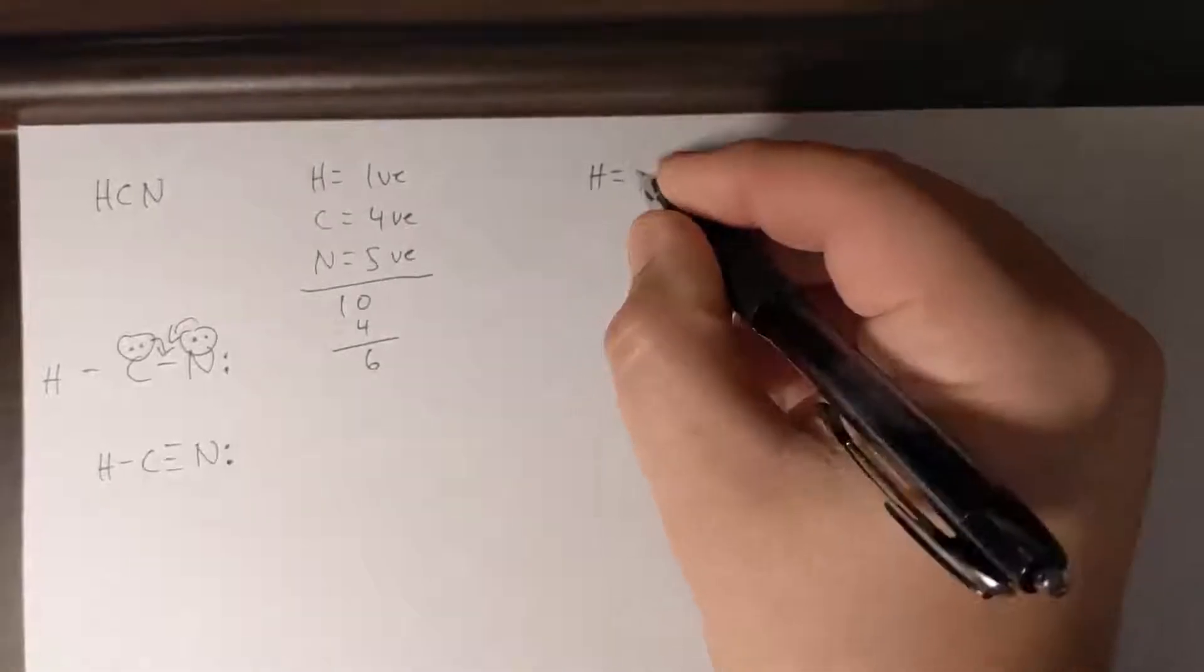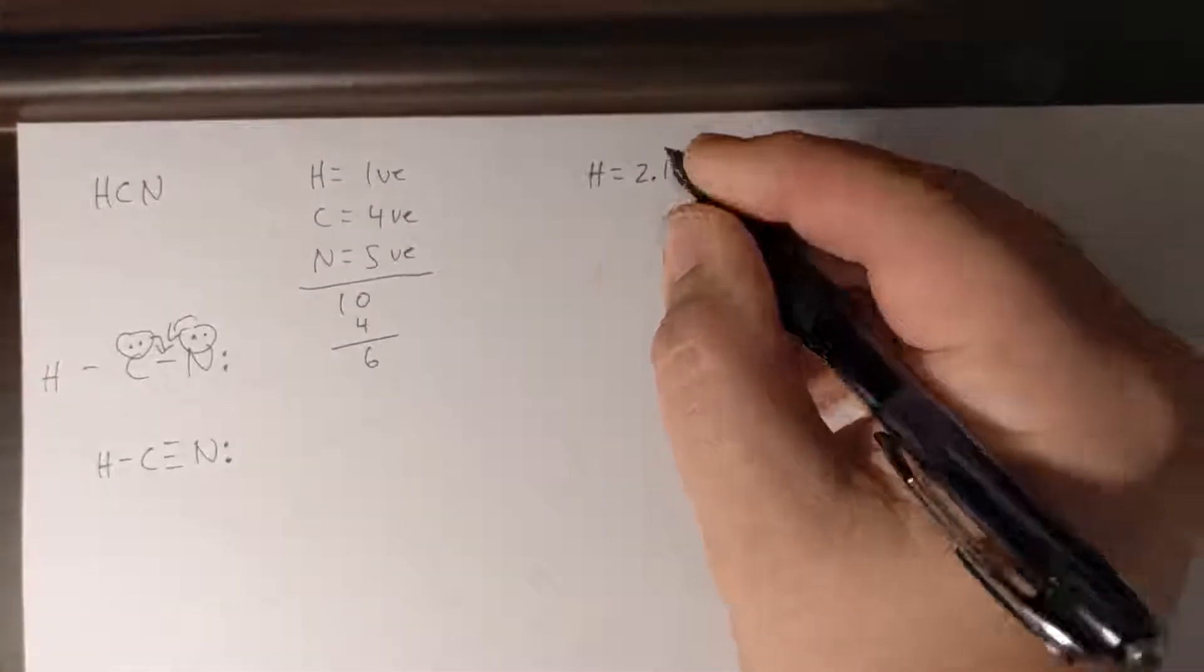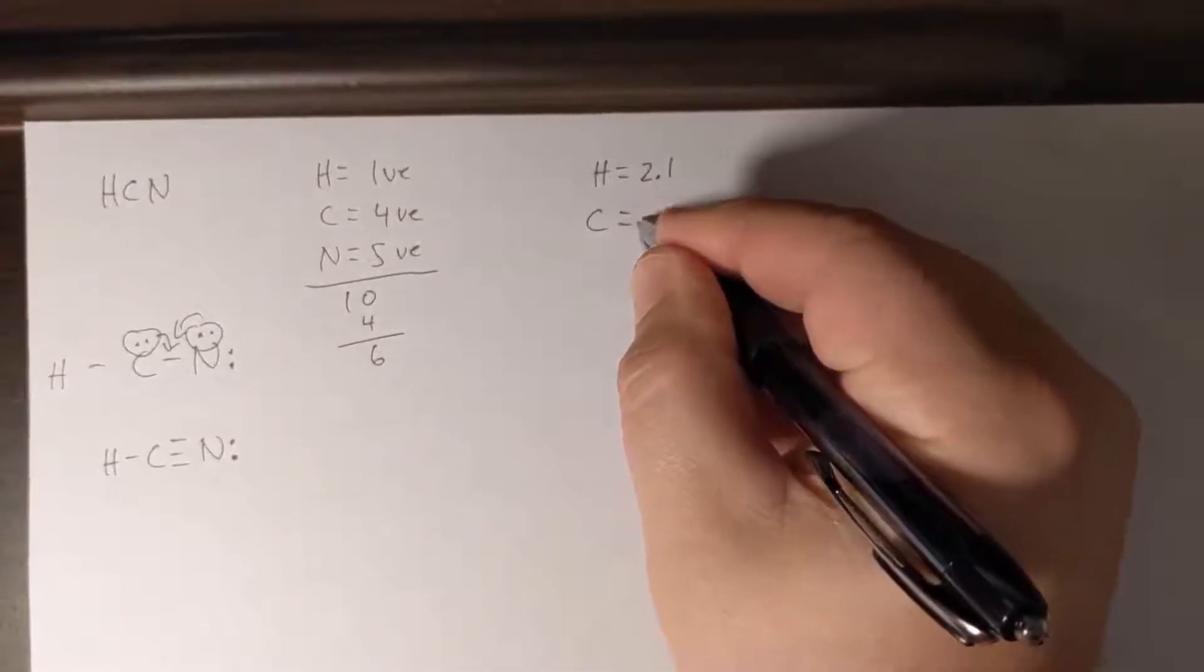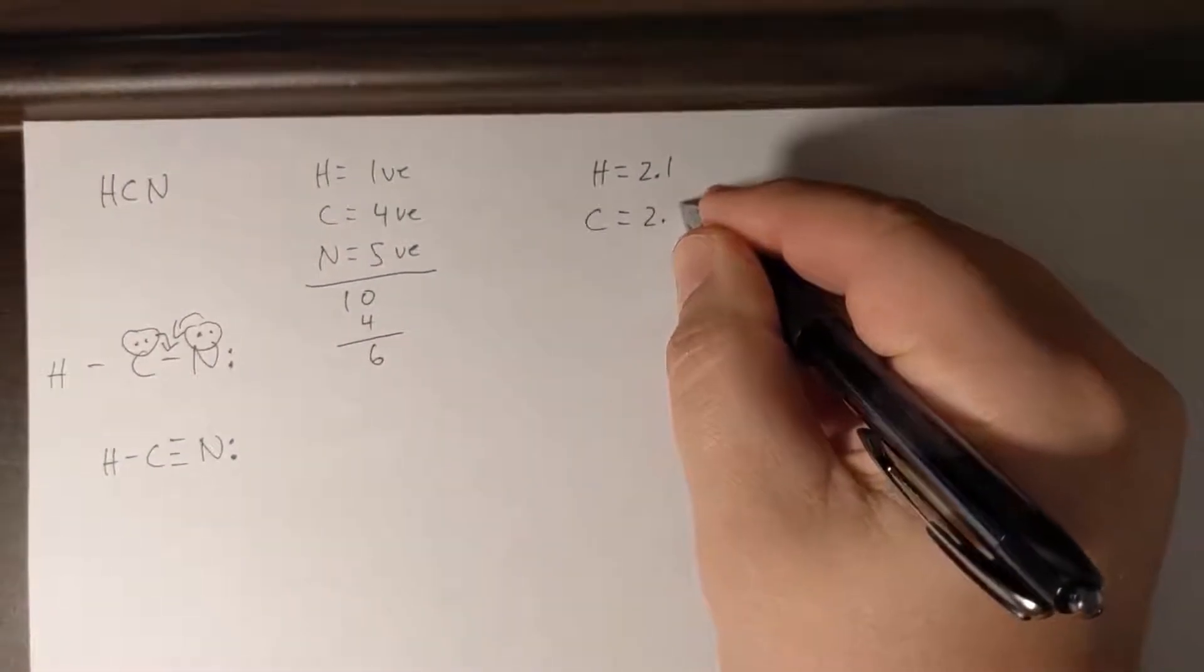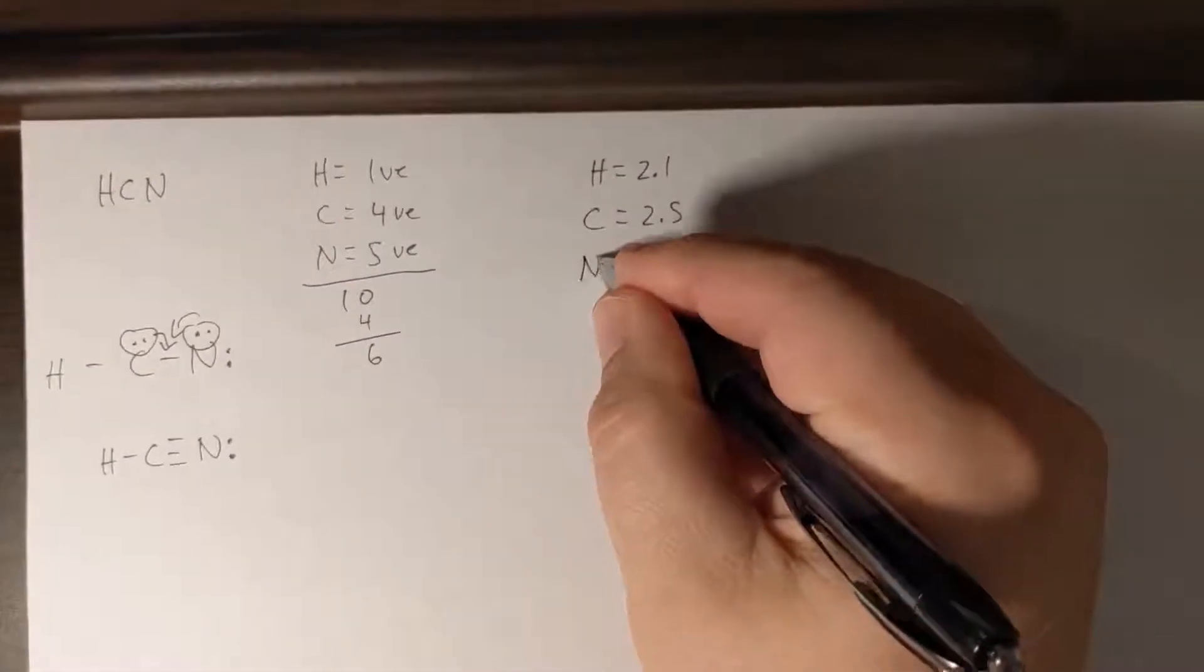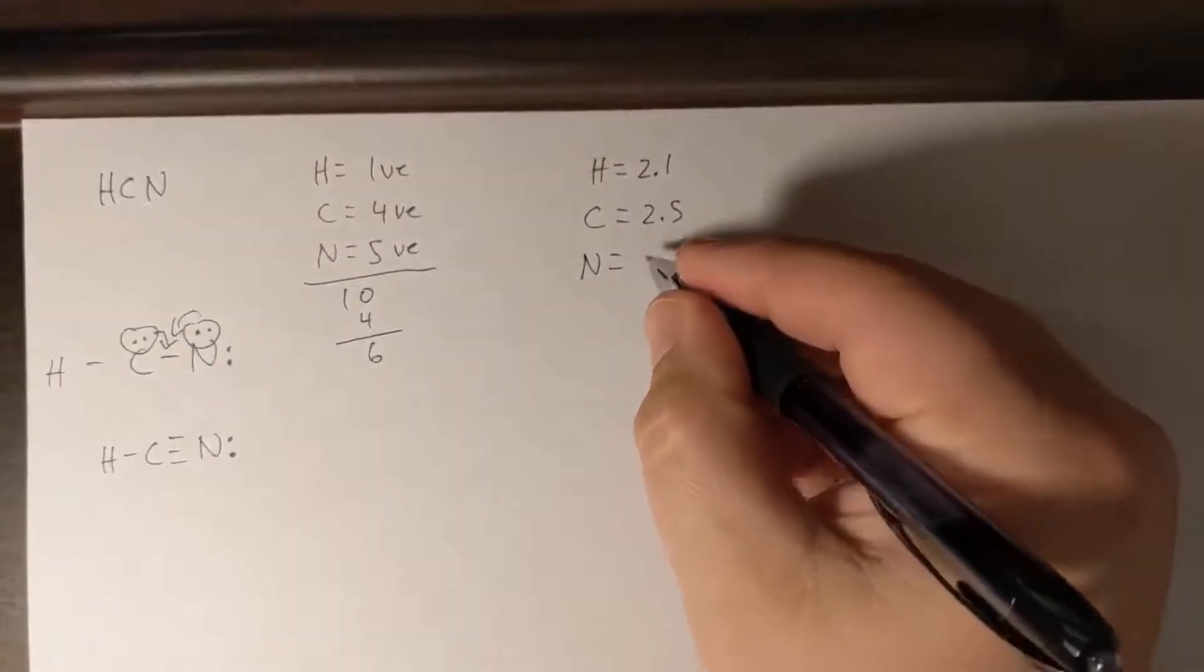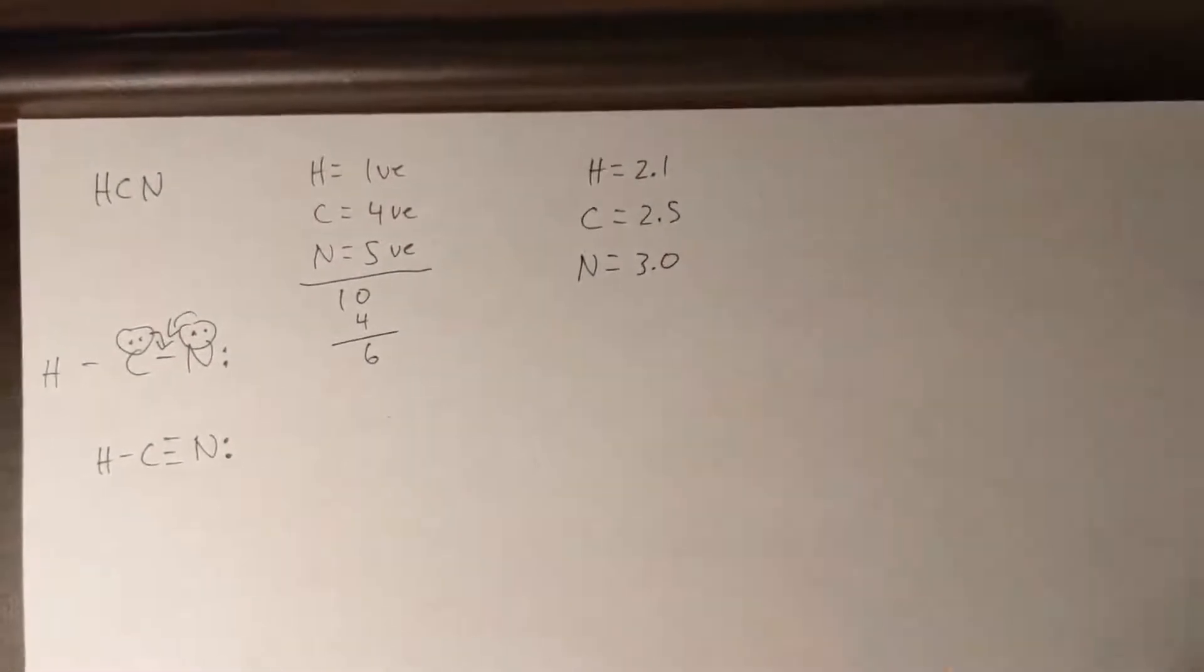And so we're going to look up the values for each of these elements. So for hydrogen it's got an electronegativity of 2.1, and for carbon it has an electronegativity of 2.5, and for nitrogen it has an electronegativity of 3.0.